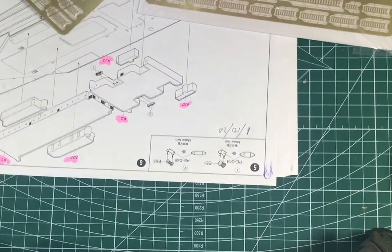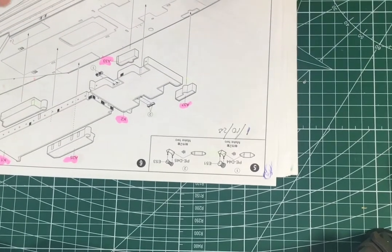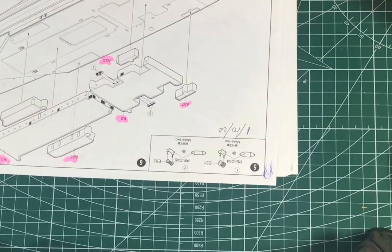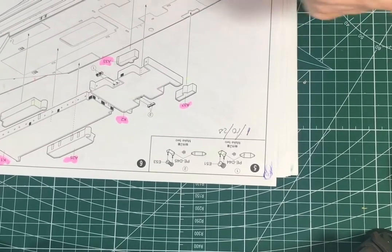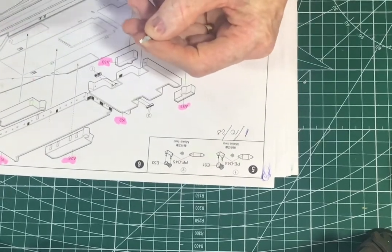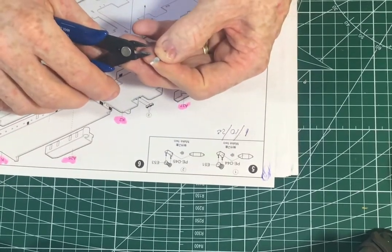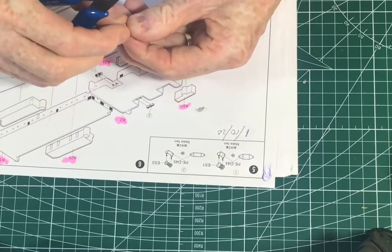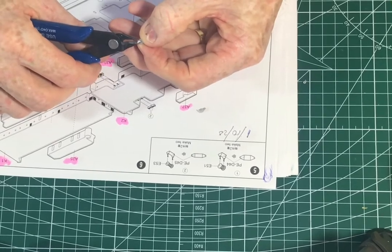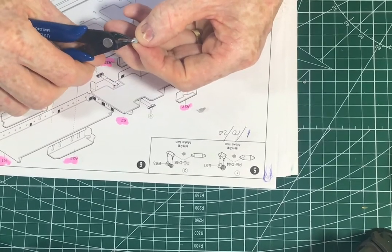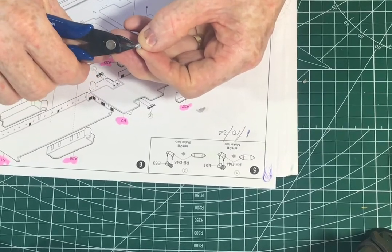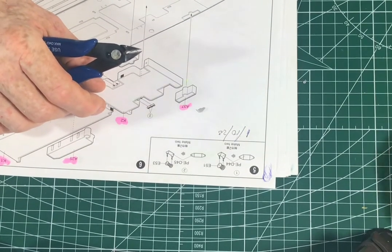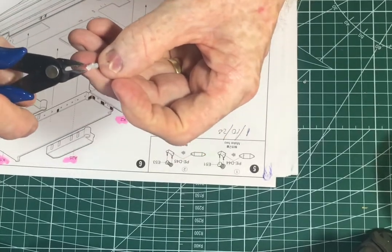Making sure I put the photo etch sheets back in the cover so that nothing gets broken and lost. Now I'm trimming off the sprue, trying to be as careful as I can because in the middle of that end of that part is a small pin which will go into the photo etch part. These parts are very small.